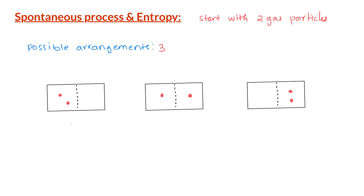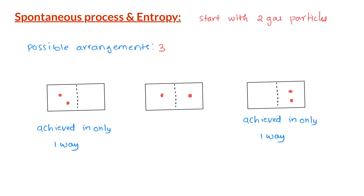The first arrangement can only be achieved in one way — both gas particles on the left hand side. The third arrangement can also only be achieved in one way — both particles on the right hand side. The second arrangement, however, can be achieved in two different ways.